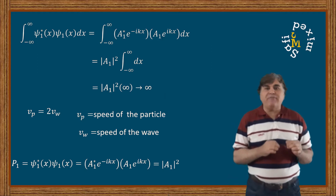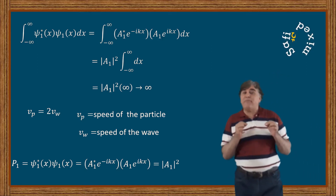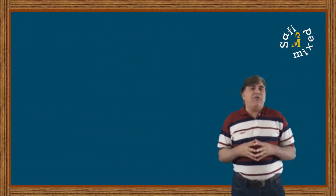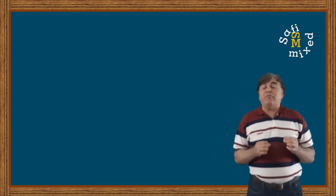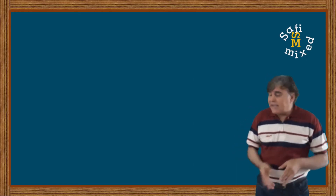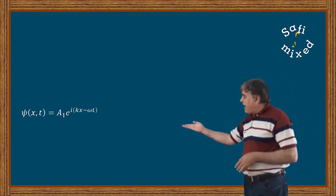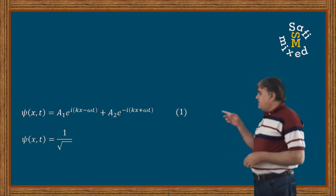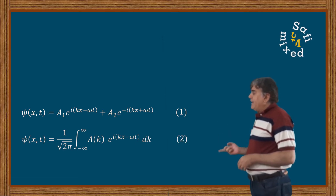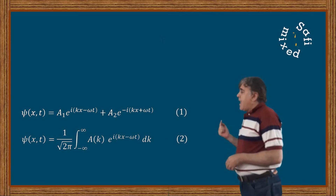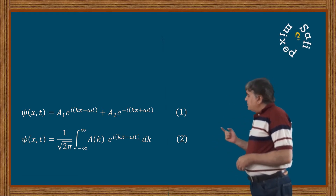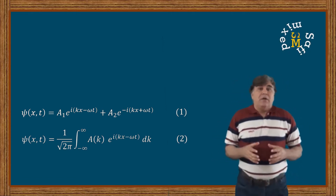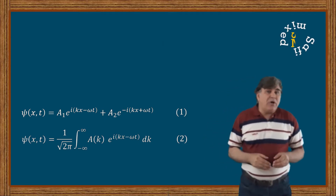All three issues can be resolved if instead of considering the general wave function as a superposition of two wave functions ψ₁(x) and ψ₂(x), we consider a wave function as a superposition of a very large number of waves of different wave numbers. That is, instead of relation 8 from video part 1, we consider the wave function of the form: ψ(x,t) = 1/√(2π) · ∫₋∞^∞ A(k) · e^(i(kx − ωt)) dk.